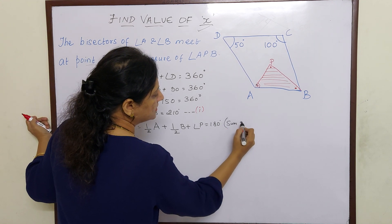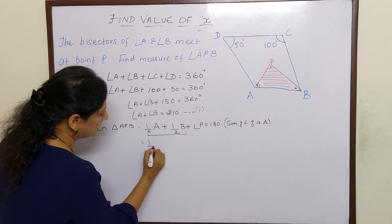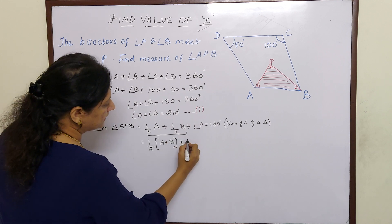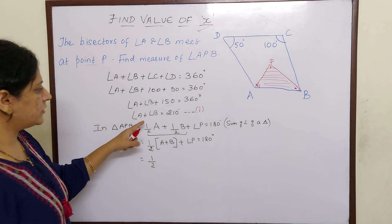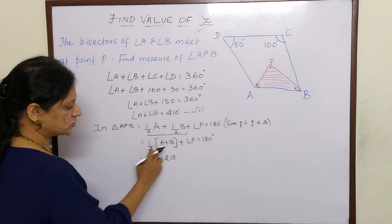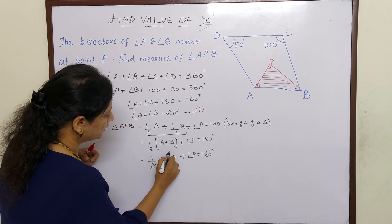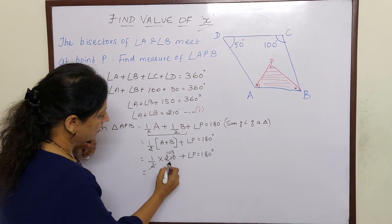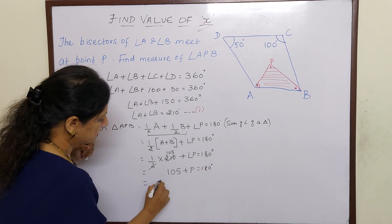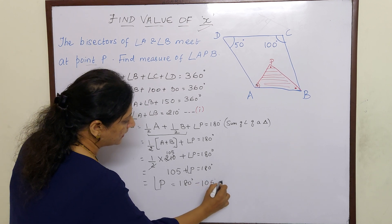In triangle APB: half of A plus half of B plus angle P equals 180, because the sum of angles of a triangle is 180. Since half is common, we take it outside: half of (A plus B) plus angle P equals 180. We already know angle A plus angle B is 210, so: half of 210 plus angle P equals 180. That gives 105 plus angle P equals 180. Therefore angle P equals 180 minus 105, which is 75 degrees.